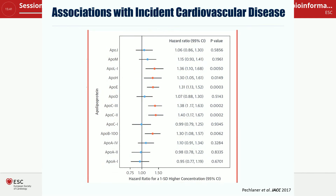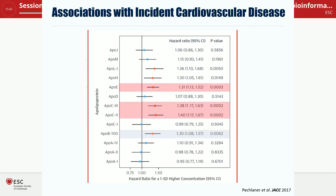Here we ask the question whether APO-B100 or APO-A1 are really the best predictors for cardiovascular disease. As expected, higher APO-B100 levels are associated with a higher risk — a hazard ratio for one standard deviation higher concentration giving about 30% higher risk. But if you compare APO-B100 against the other APO-lipoproteins, APO-B100 wasn't the best predictor. Three other APO-lipoproteins outperformed APO-B100 in this analysis: APO-E, APO-C3, and APO-C2.